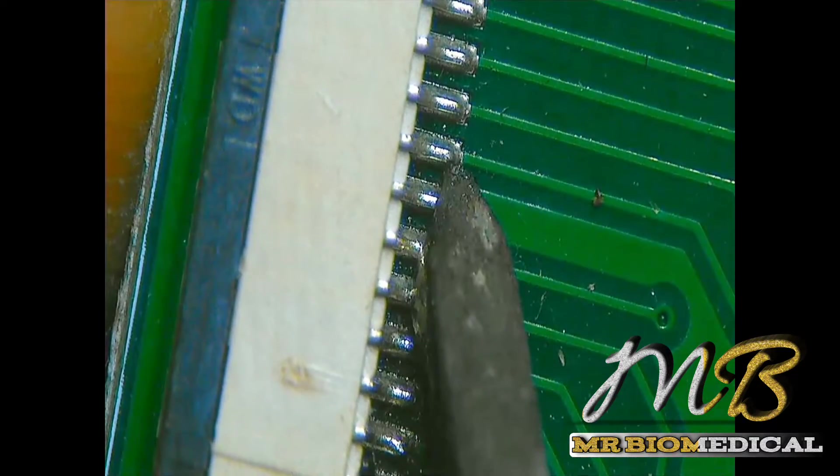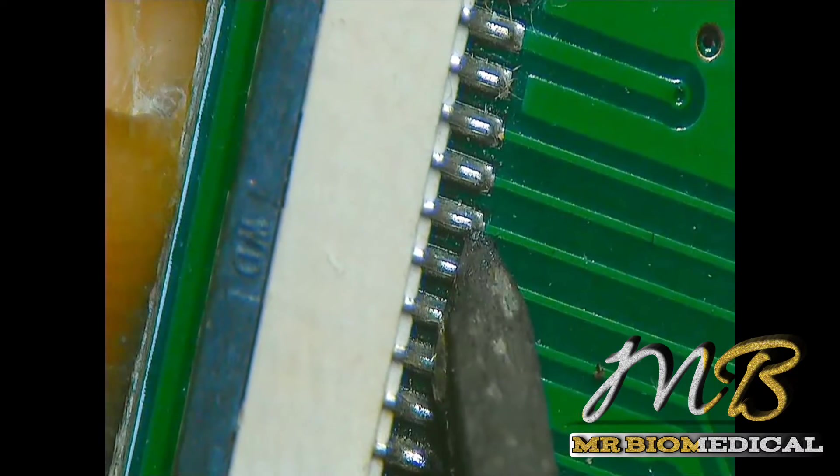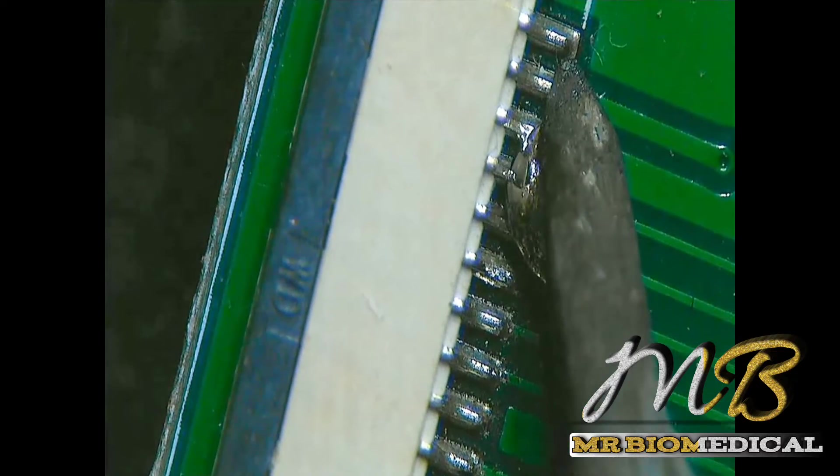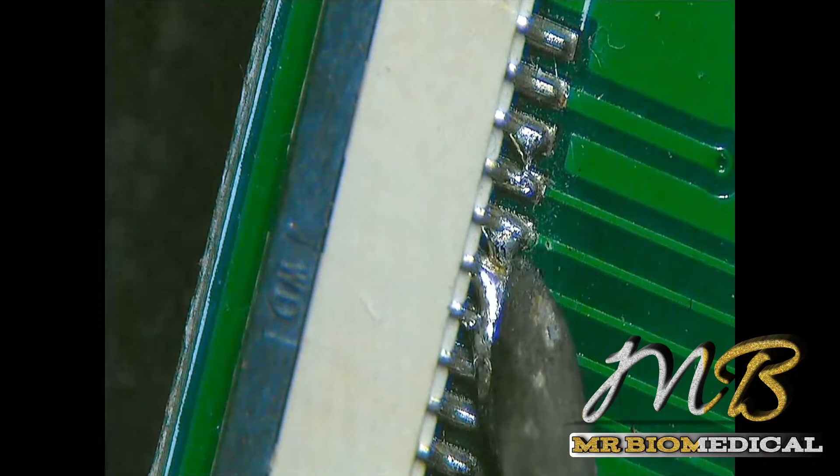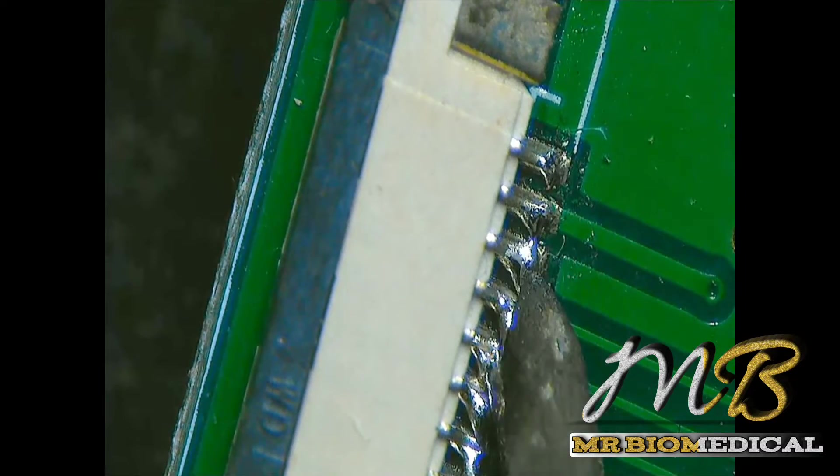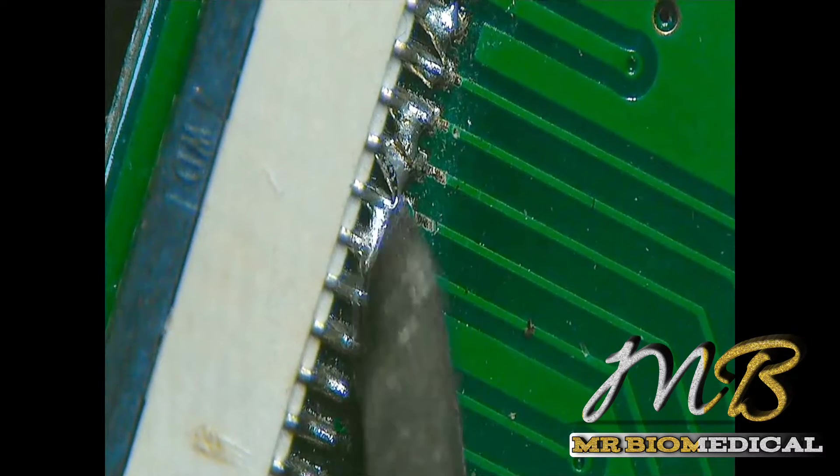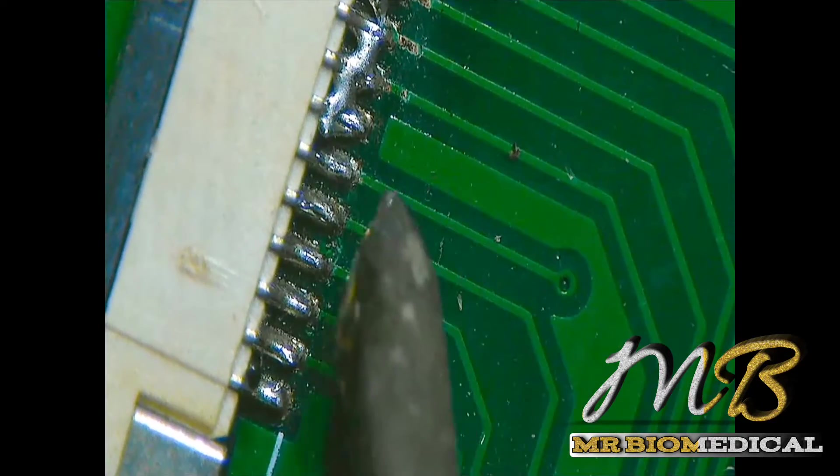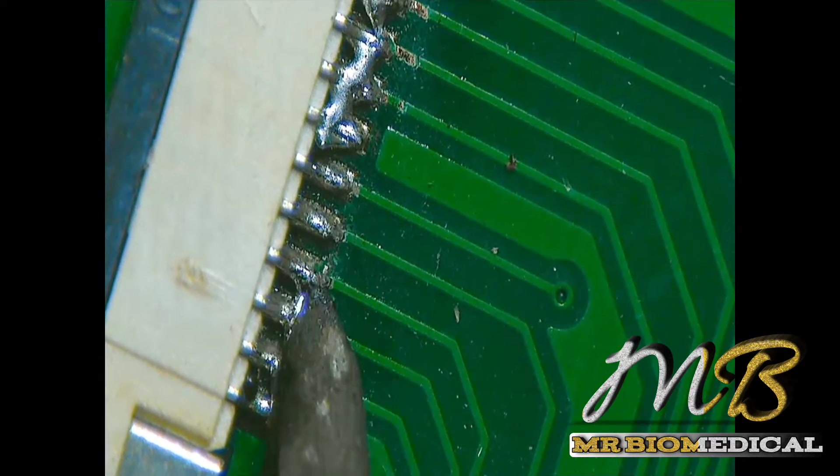Always remember, don't do it directly because if you are doing it with a hot air gun directly it will melt down the plastic on the FPC connector. If it is a bad FPC connector you can do it directly and change it easily.